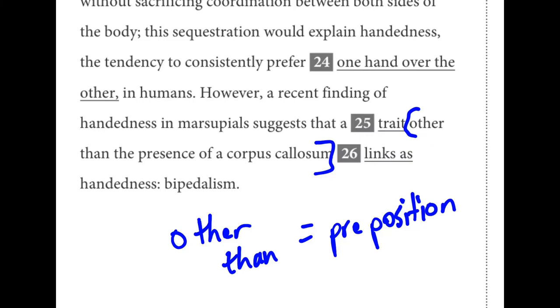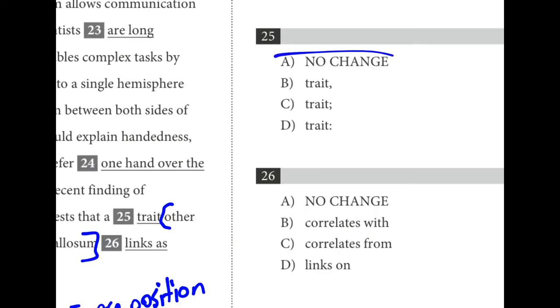For number twenty-five, 'other than' is functioning like a preposition. We have a series of prepositional phrases here rather than non-essential information, so no commas or any punctuation are necessary at all. Twenty-five should just be A, no change.